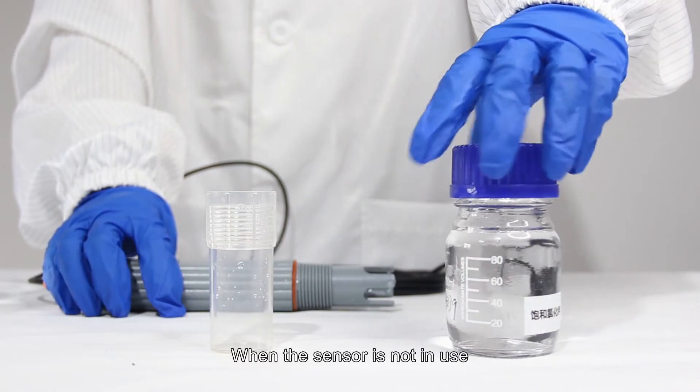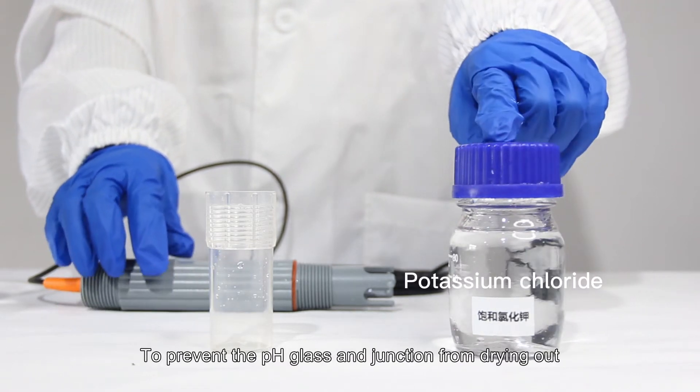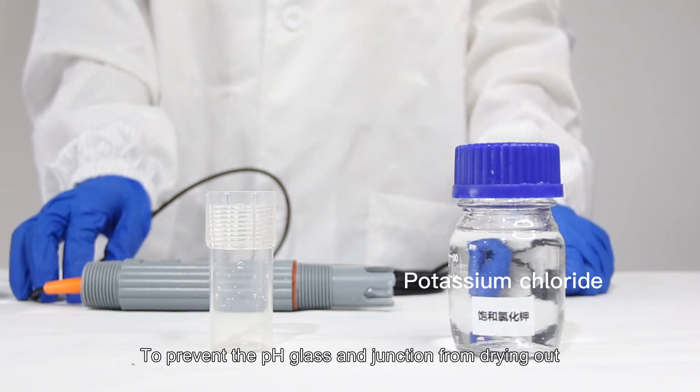When the sensor is not in use, it can be fully immersed in 3 mL potassium chloride solution to prevent the pH glass and junction from drying out.